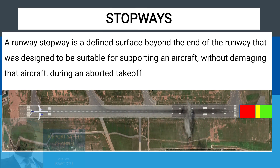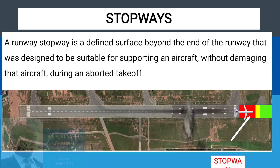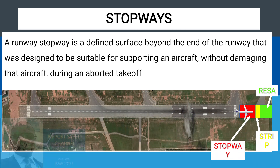Previously, we treated stopways, and we got to know that a runway stopway is a defined surface beyond the end of the runway that was designed to be suitable for supporting an aircraft without damaging that aircraft during an aborted takeoff. A stopway is located before the strip and the riser. For more knowledge, go to our previous lesson and you will find more on this topic.